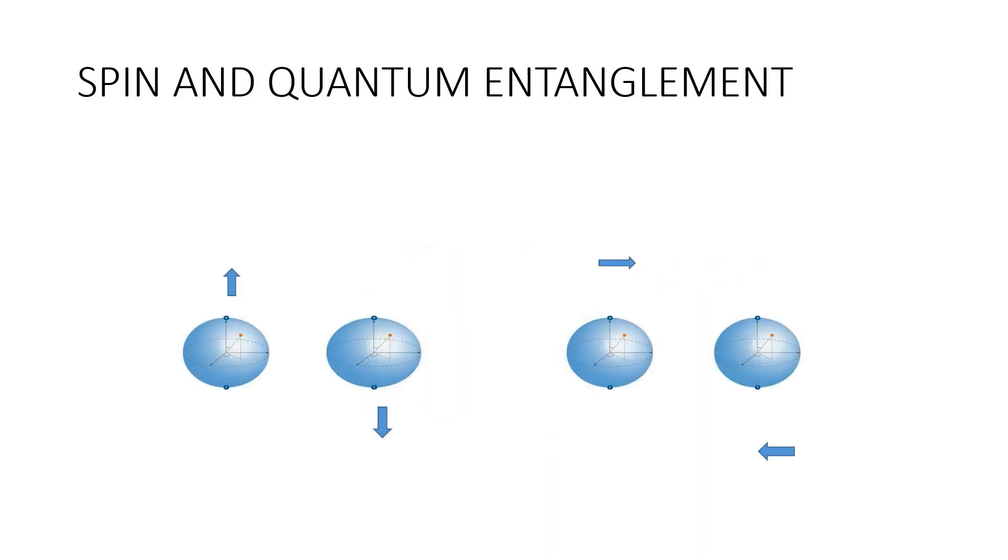If one has a spin pointing left, the other one must be right. If one is up, the other must be down. Hence, when we add the two, we get zero and hence the spin is conserved, the angular momentum is conserved. This is the simplest example of a pair of entangled particles and they are governed by a single wave function.